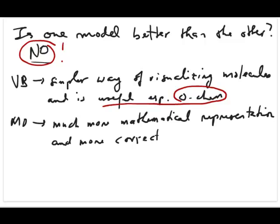The molecular orbital model is much more mathematical, because this is a full quantum mechanical treatment of a molecule. And you can think of it as being more correct, because you use all the quantum mechanical theories and apply it to the molecule.